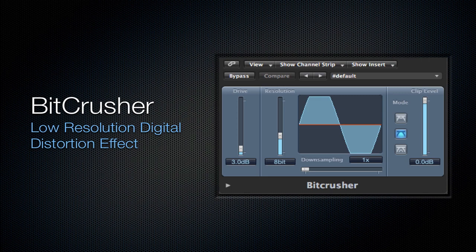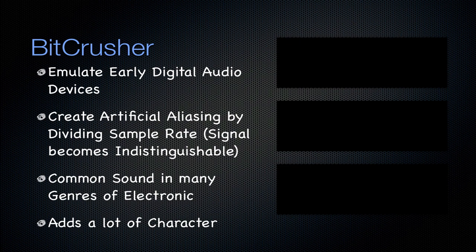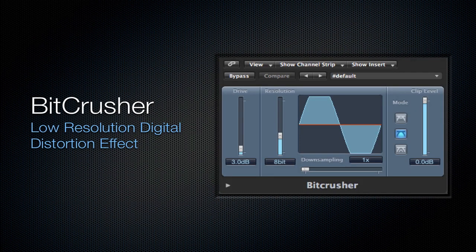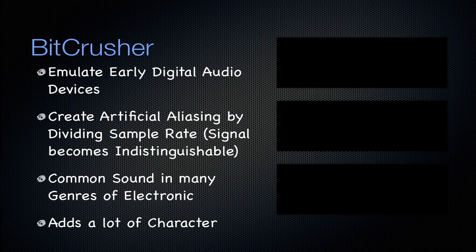The first I'm going to talk about is the BitCrusher. It's a low resolution digital distortion effect. You can emulate early digital audio devices because you can create artificial aliasing of the original signal by dividing the sample rate, and you can change the resolution of the input signal. This can create a lot of early game sounds — 8-bit, 16-bit, and stuff like that. You can also use it in a lot of genres of electronic music. I had a tutorial not too long ago about dubstep and using this to create almost a vocal-like effect on your wobbles, which I will definitely be putting in the links here to the right.